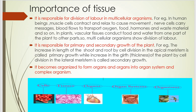In plants, vascular tissues conduct food and water from one part of the plant to other parts. So multicellular organisms show division of labour. And the next importance is that tissue is responsible for primary and secondary growth of the plant.